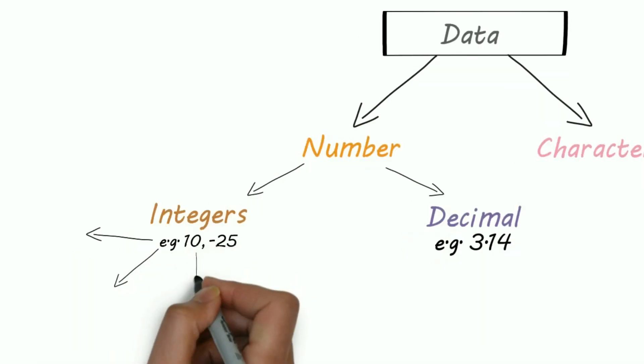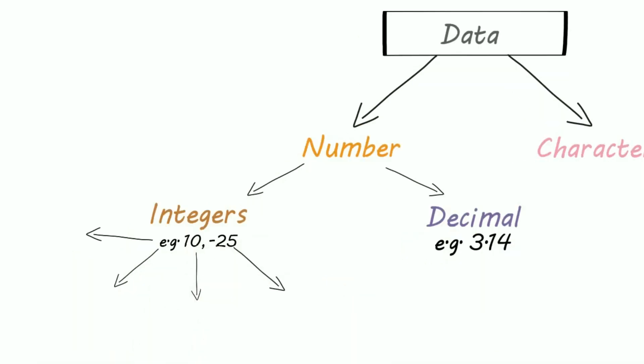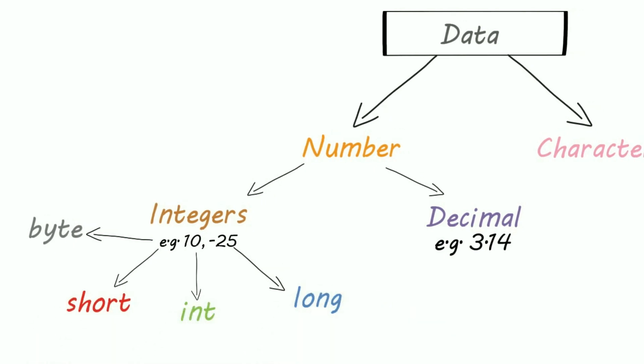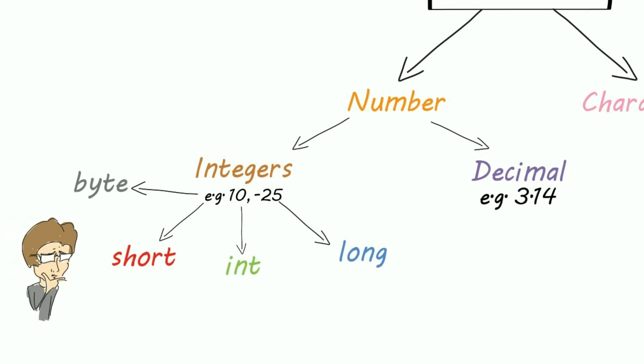Integers are further divided into four data types: byte, short, int, and long. Now why we need four different data types for just integers. Why not just use one of them?